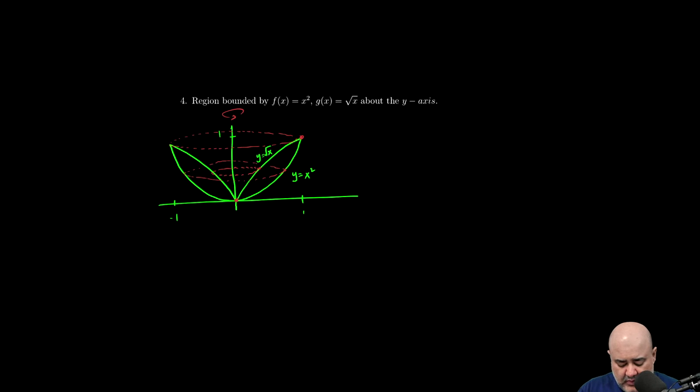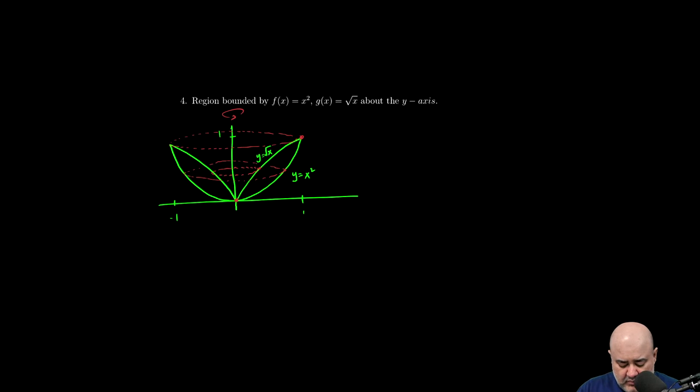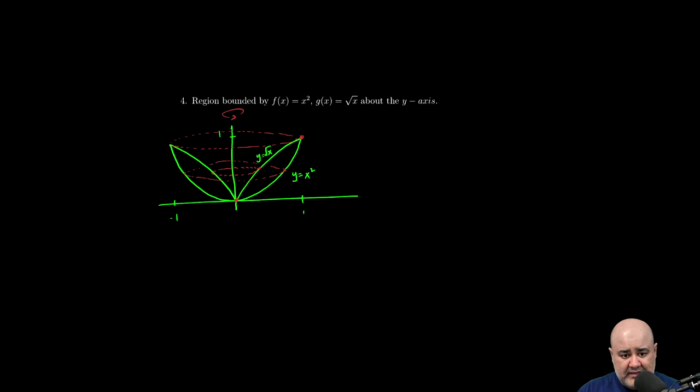When we slice this horizontally, I'm going to get two radii here. One radius is going to be of the inner shape. And the other radius is going to be of the outer shape. So this distance from here to here is going to be some x value. The distance from here to here will be another x value. So let's call this x1, let's call this x2.